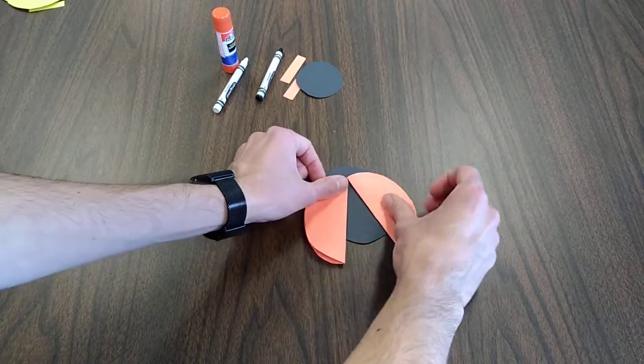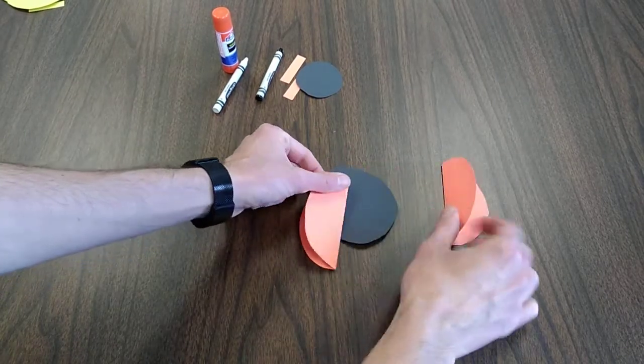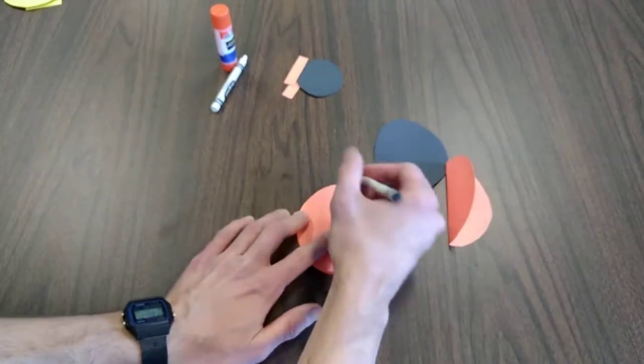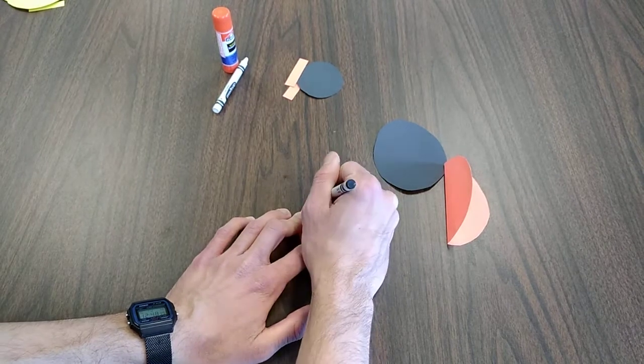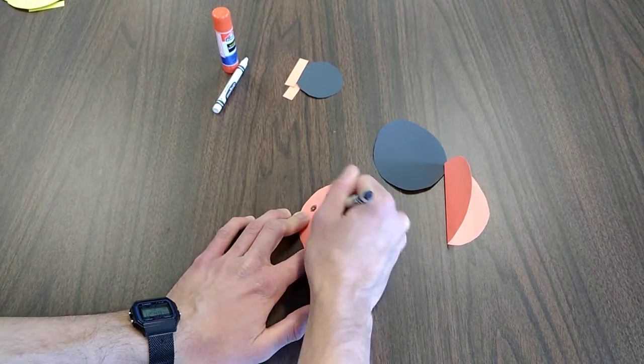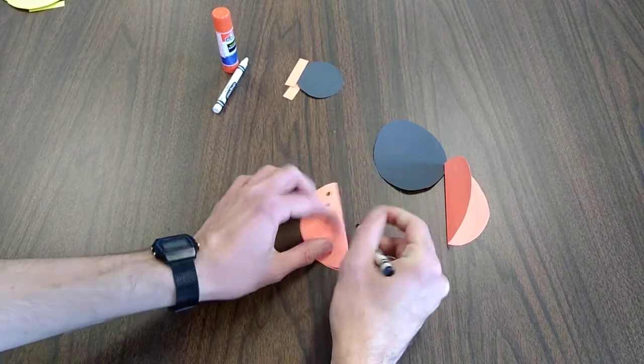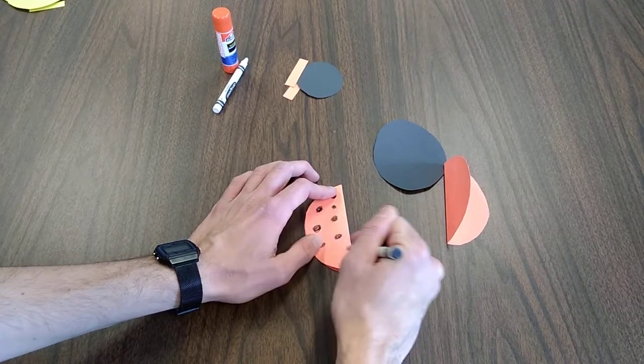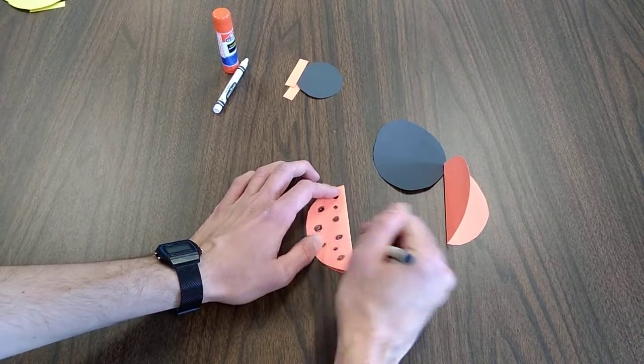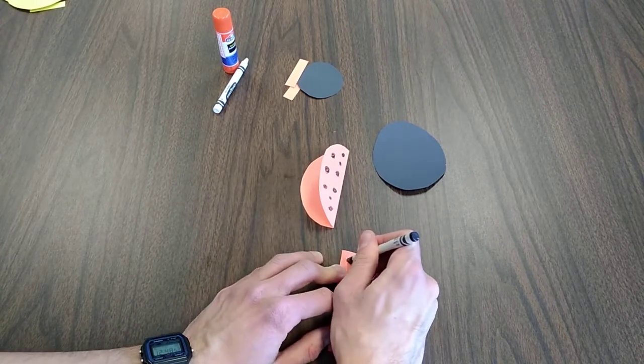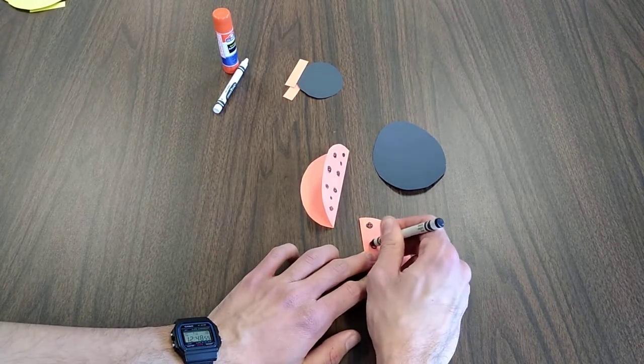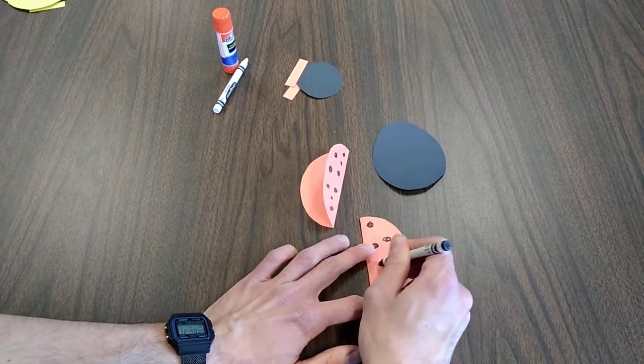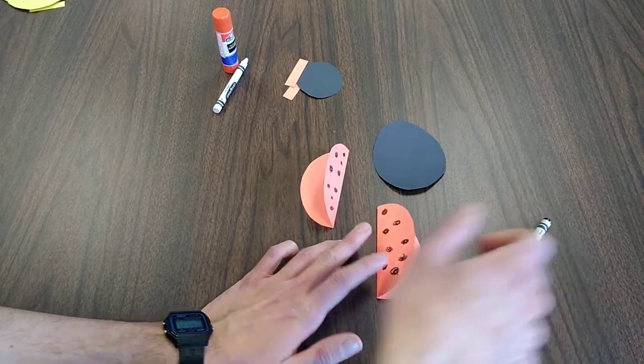We're going to glue them on right about there. But first, we're going to make spots with our black crayon. So on each wing, I'm just going to fill up the wings with some circles. Very nice. All right.